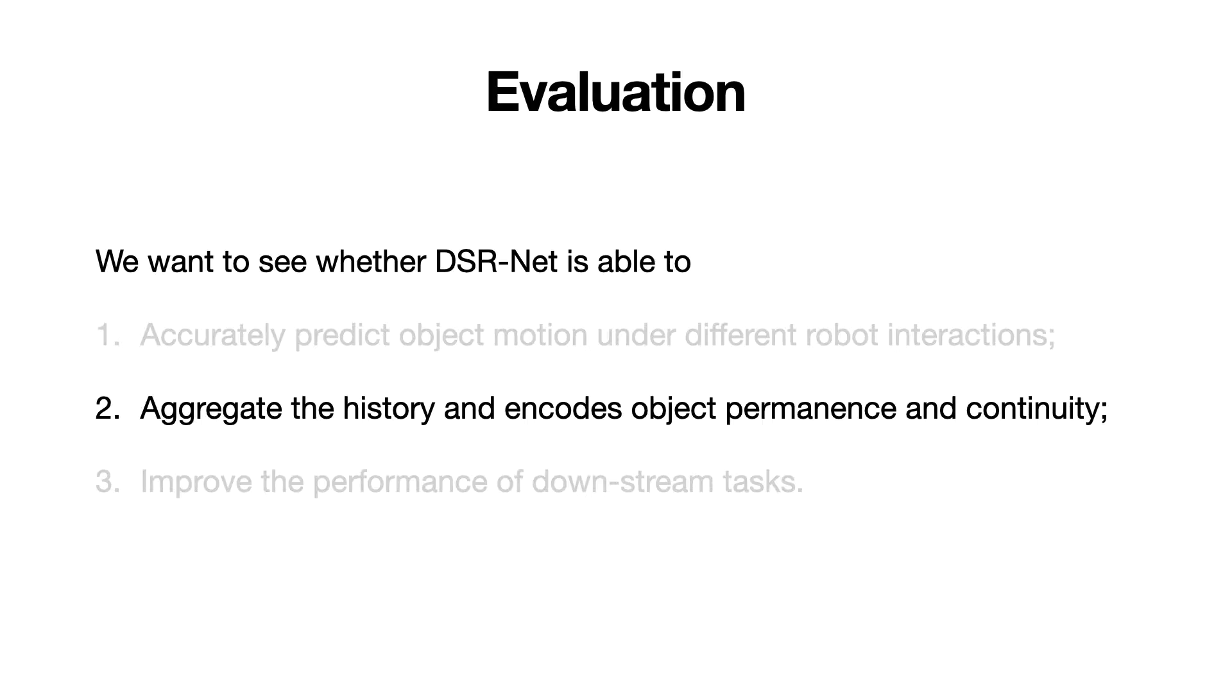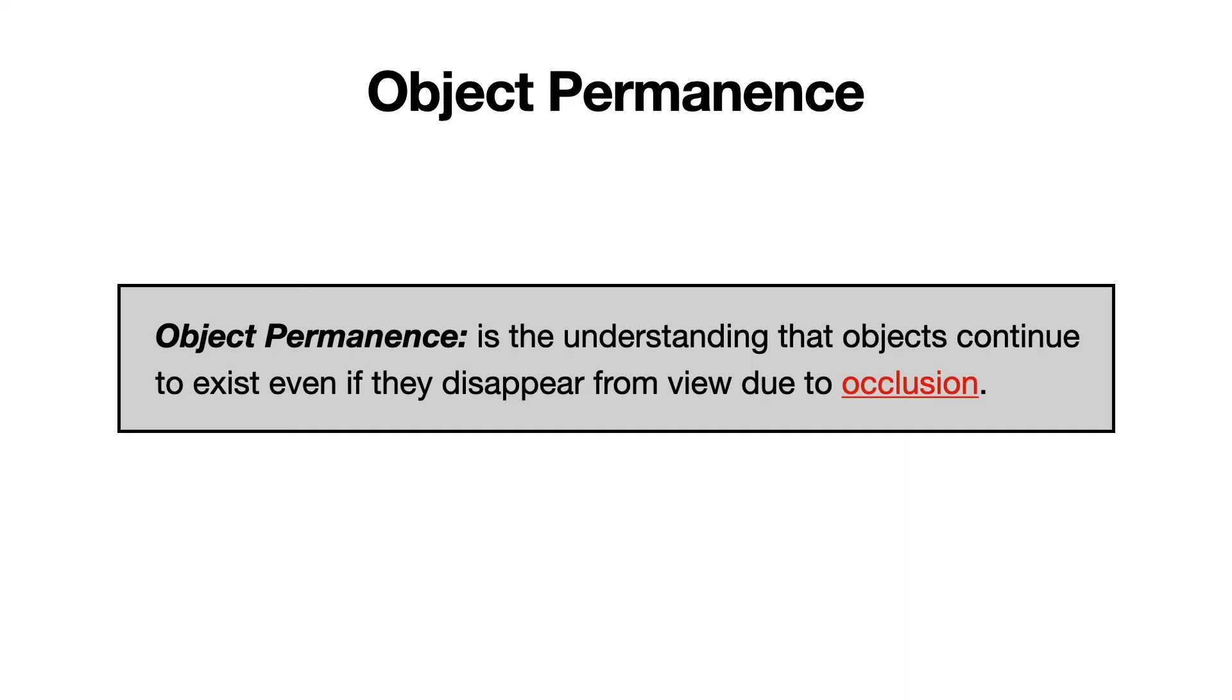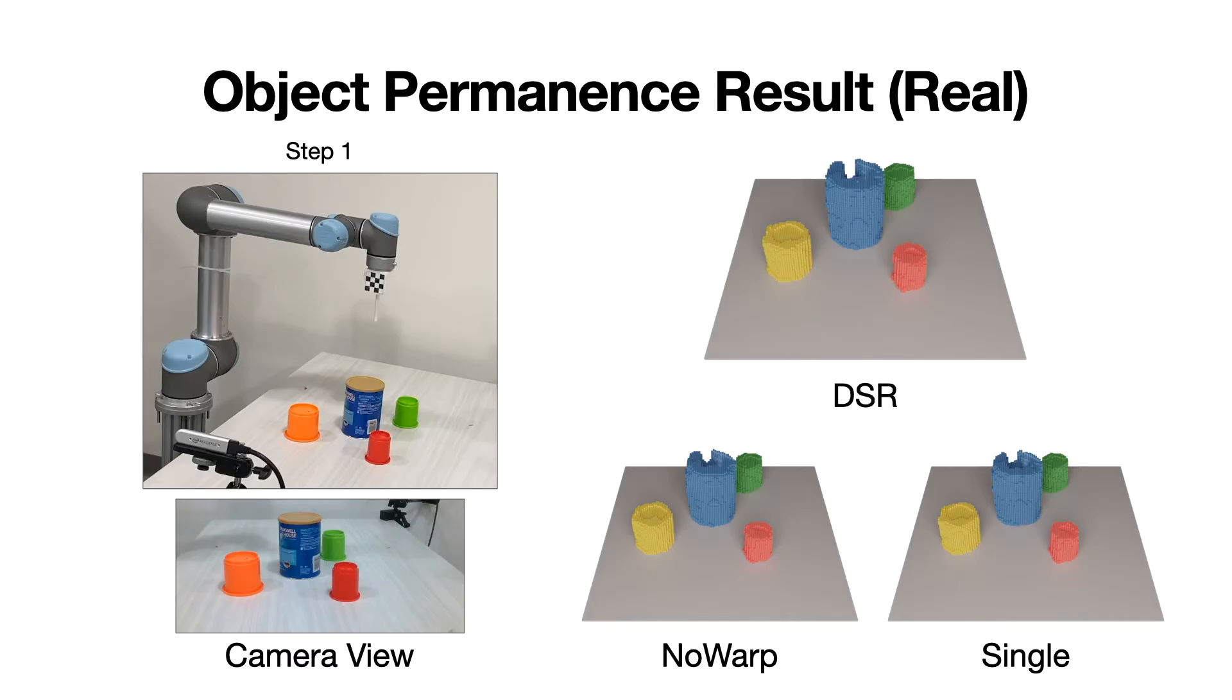Next, we want to check our model's ability to aggregate the history and encode object permanence and continuity. Object permanence is the understanding that objects will continue to exist even if they disappear from view due to occlusion. In this experiment,